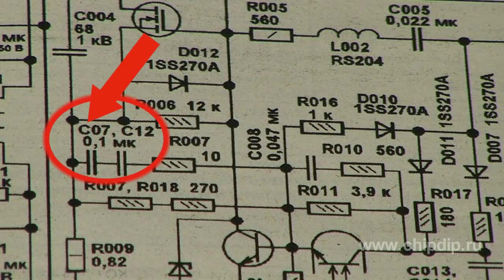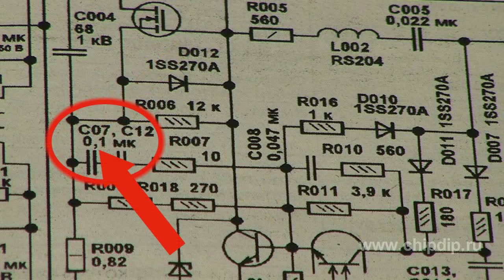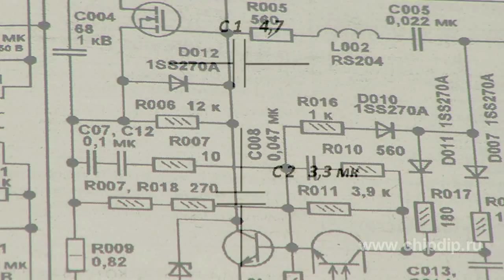They further denote the letter symbol letter C, the capacitor order number on the diagram, and at some space the number denoting the capacitance rated value.